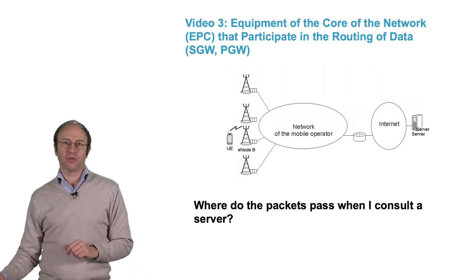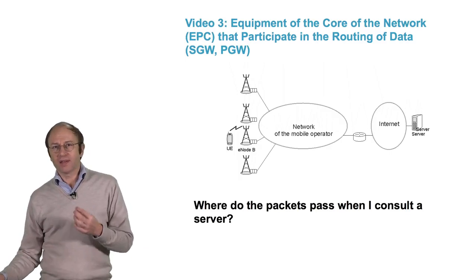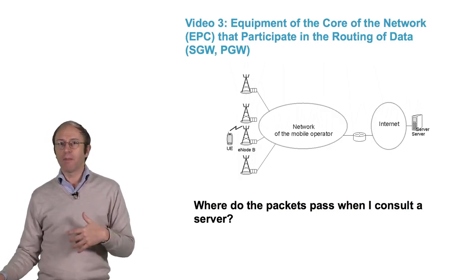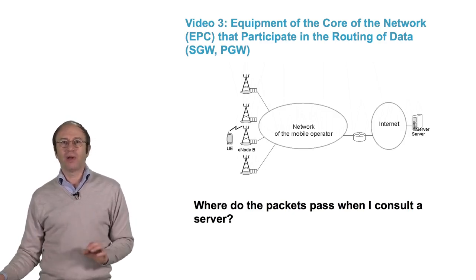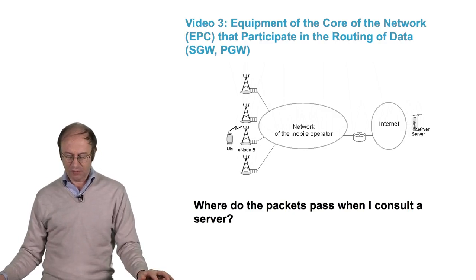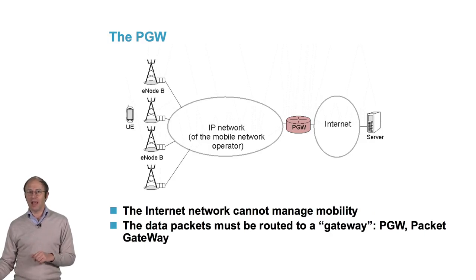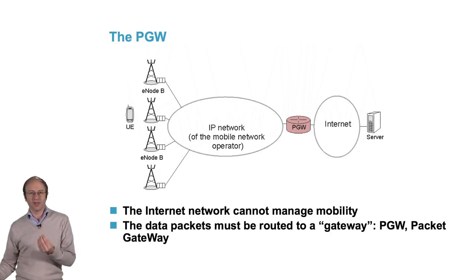When I consult a server using my smartphone or website, what do the packets that arrive at my terminal pass through? That is the question we will answer in this video. The Internet network itself cannot manage mobility. Each packet is intended for an address, and an address is generally linked to a physical location.